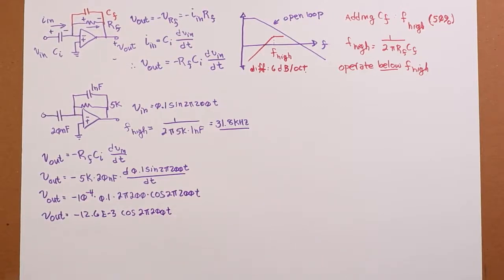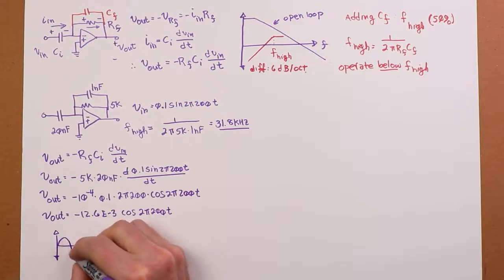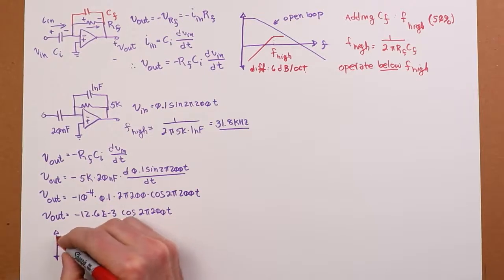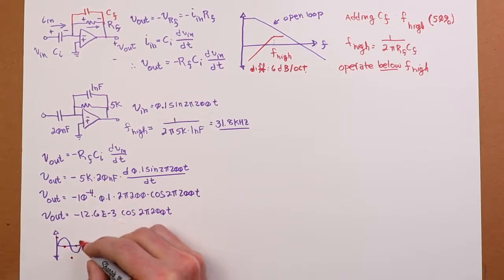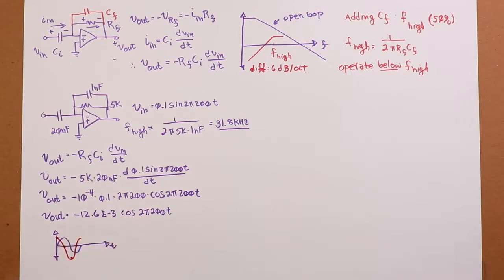Now we can just combine up our goodies, and we wind up with a negative 12.6 millivolts times the cosine of 2π 200t. The derivative of a sine wave is a cosine wave. Here's your sine wave. What's the rate of change on this? It's obviously really steep over here, so you get a big number. Here the rate of change is zero. Here the rate of change is negative, big. Here the rate of change is zero. So it's obvious that's a cosine wave.